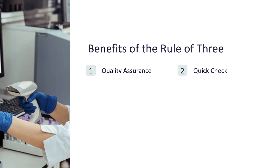How the Rule of Three helps us: First, as a part of quality assurance, the Rule of Three aids in identifying discrepancies between hemoglobin and HCT, which might suggest instrument errors, calculation mistakes, or abnormal blood conditions that require further investigation. Second, this rule enables laboratory professionals to perform quick calculations for an initial review of CBC data.